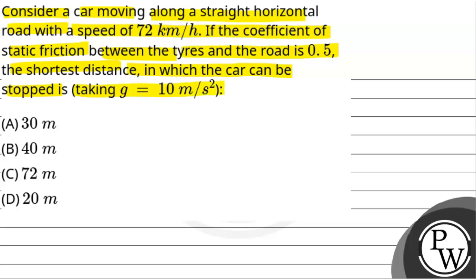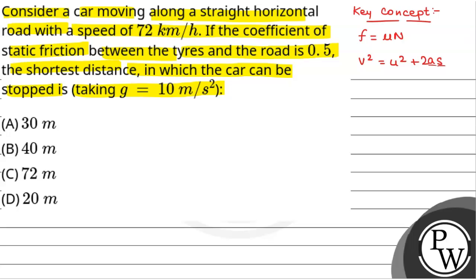We will solve this question. First of all, we will see what will be the key concept used to solve this question. The key concept is: frictional force F is equal to mu into N, where mu is the coefficient of friction and N is the normal reaction. Also, from the equation of kinematics, we have v square equals u square plus 2a into s, where v is the final velocity, u is the initial velocity, a is the acceleration, and s is the distance travelled by the car.